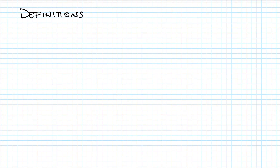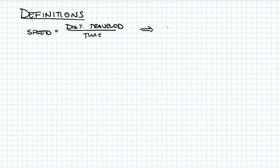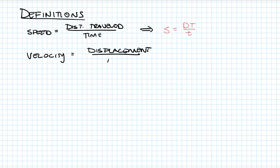We have some definitions that are going to be important to our equations. The first is that speed is distance traveled over time, giving us the equation: average speed equals distance traveled over time. The other definition is that velocity is displacement over time.